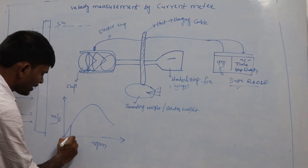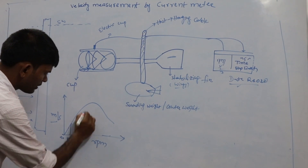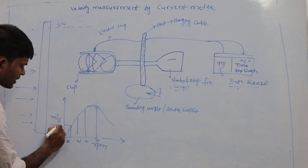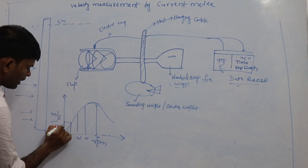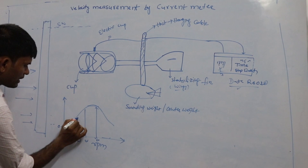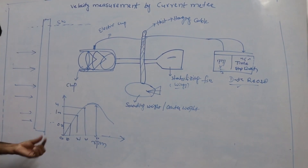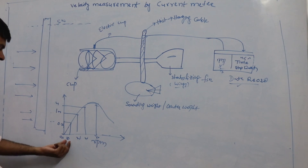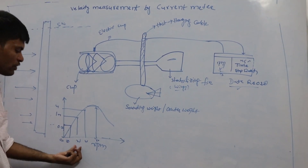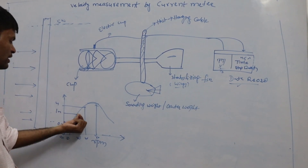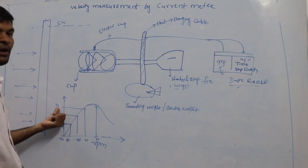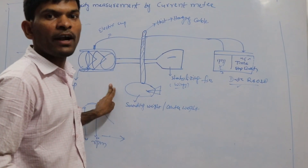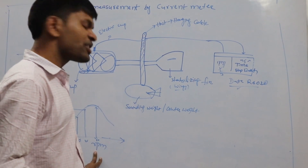On the rating curve graph, the RPM axis starts at 0.5 and goes up to 10, 20, 40, 60, and P maximum. The velocity axis shows values from 0.2 meter per second up to 1 and 4 meters per second. This means when the impeller revolves 10 times, the speed is 0.2 meters per second; when it revolves 20 times, the speed is 1 meter per second; at 40 revolutions, it is 4 meters per second. This is the rating curve — every current meter has its own rating curve, provided by the manufacturer or determined by calibration in the lab.